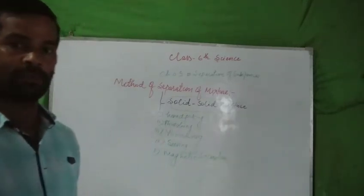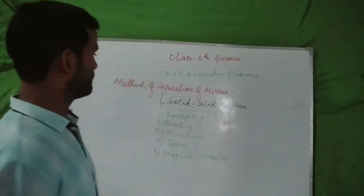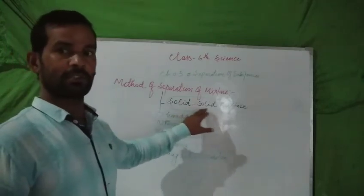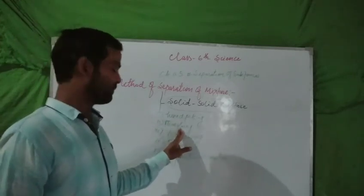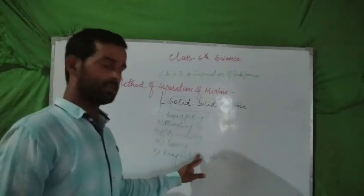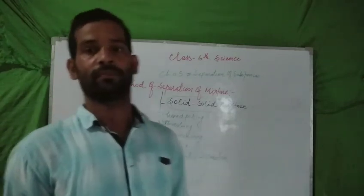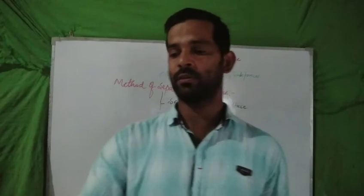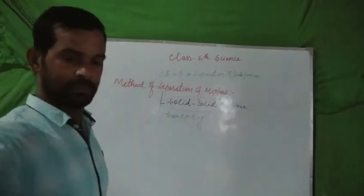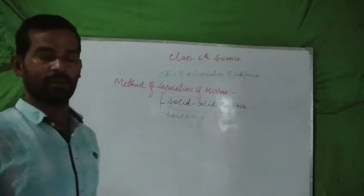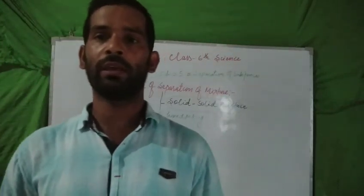So the method of separation of a mixture in case of a solid-solid mixture can be done by hand picking, threshing, winnowing, sieving, and magnetic separation. Each and every topic will be discussed. Hand picking is a method in which the impurity is separated manually — that is, by hand — so it has to be removed.